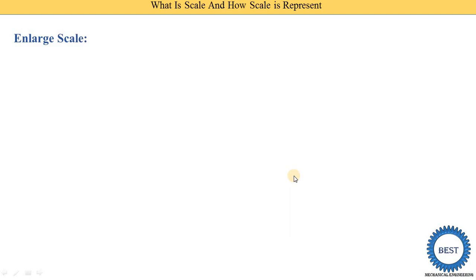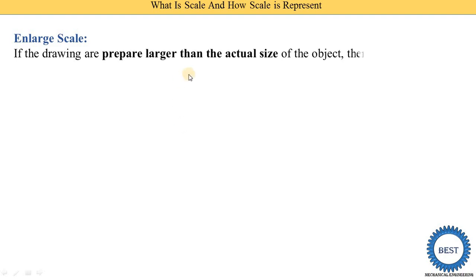Next is the enlarged scale. From the name, we understand that the dimensions of the object are increased. Earlier examples include a watch, screws, and small electronic equipment. They are smaller in dimension, making it difficult to draw and read dimensions. When an object is designed, its drawing is prepared and provided to manufacturing units, so we need to draw it in a proper, larger dimension. If the drawing is prepared larger than the actual size of the object, the scale is said to be an enlarged scale.